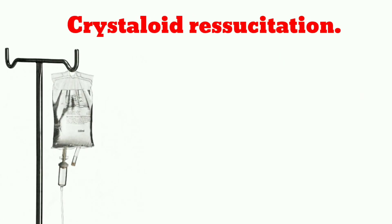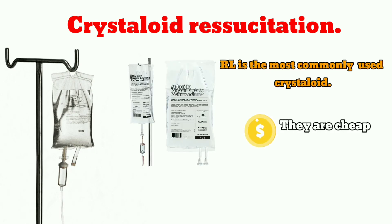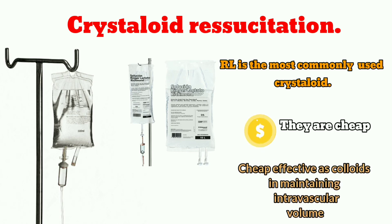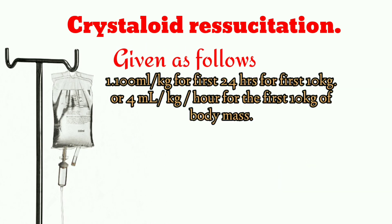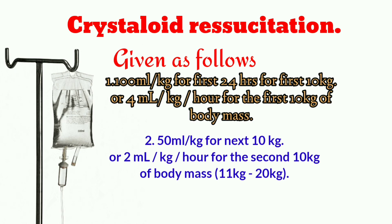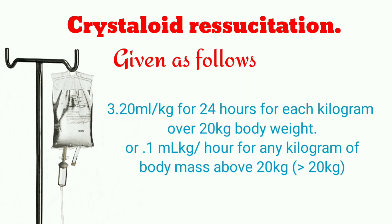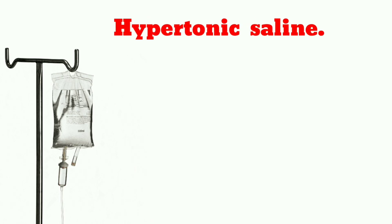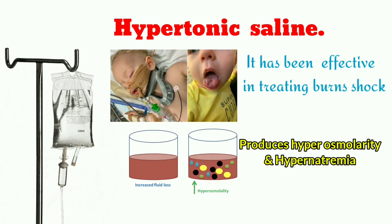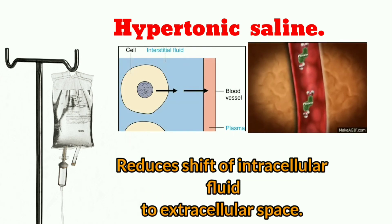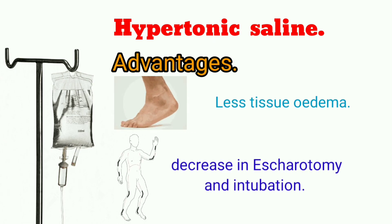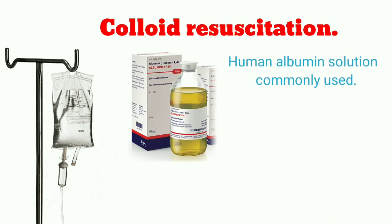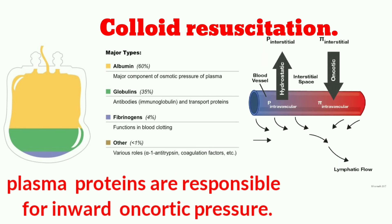Crystalloid resuscitation: Ringer's lactate is the most commonly used crystalloid. It is cheap and said to be as effective as colloids in maintaining intravascular volume. In children, maintenance fluids must also be given — normally dextrose-saline — as follows: 100 mL/kg for 24 hours for the first 10 kg; 50 mL/kg for the next 10 kg; and 20 mL/kg per 24 hours for each kilogram over 20 kg body weight. Hypertonic saline has been effective in treating burn shock; it produces hyperosmolarity and hypernatremia, which reduces the shift of intracellular water to the extracellular space. Advantages include less tissue edema and a resultant decrease in escharotomy and intubations.